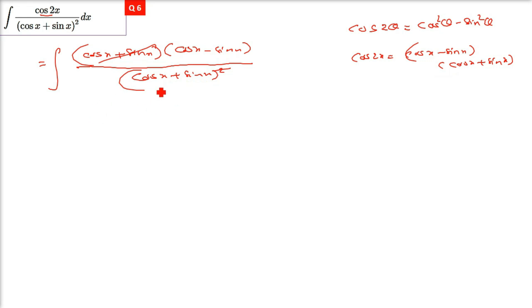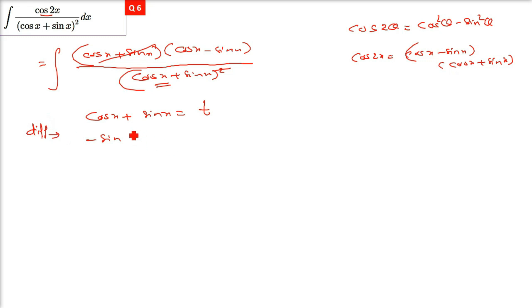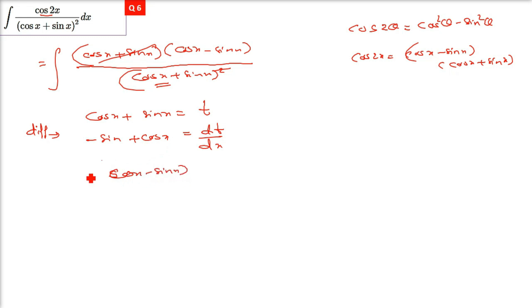We're left with (cosx − sinx) in the numerator and (cosx + sinx) in the denominator. Remember this type of question — similar ones appear later. Now take cosx + sinx = t. Differentiating: d/dx(cosx + sinx) = −sinx + cosx, so (cosx − sinx)dx = dt.